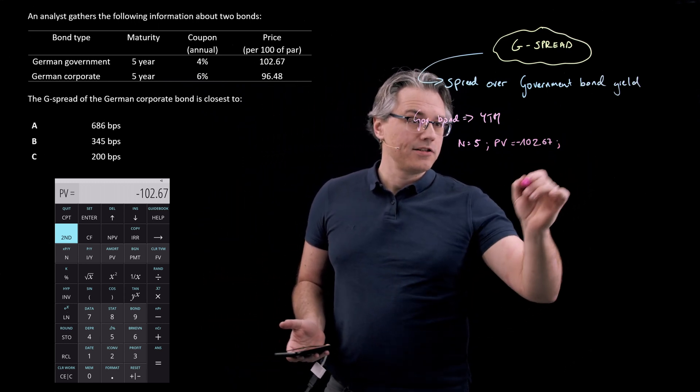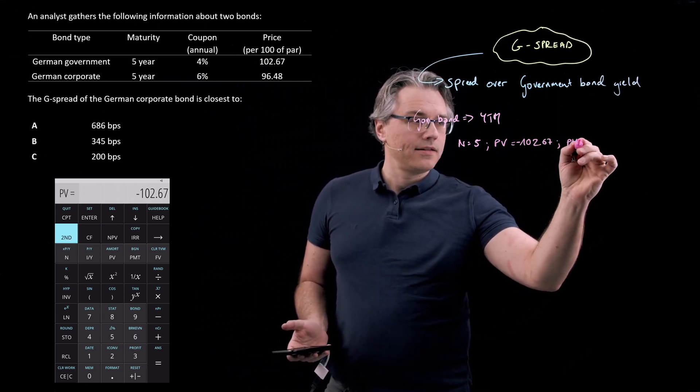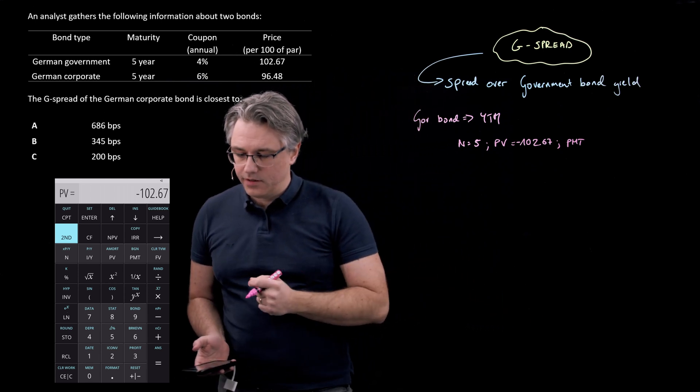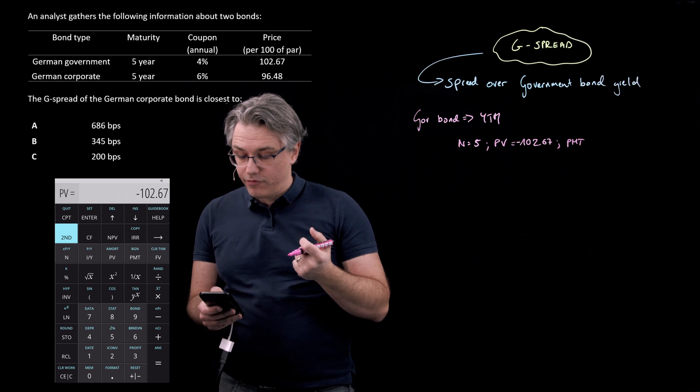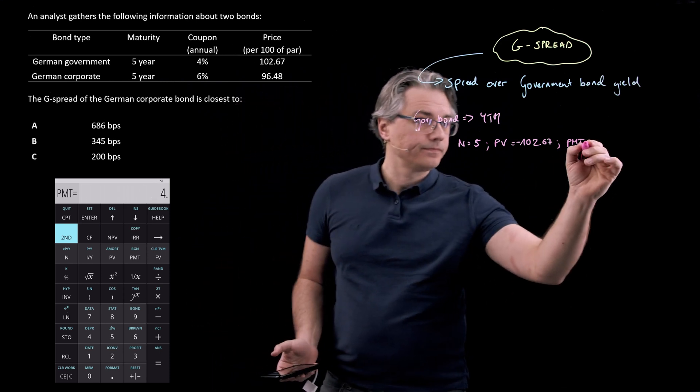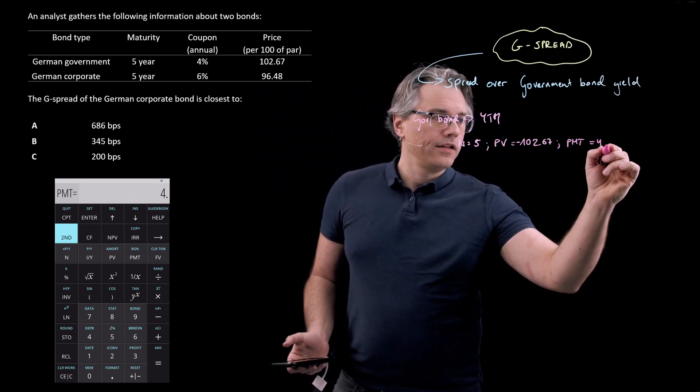Now, in terms of the PMT, that's going to be the coupon. I'll set this at the coupon for the German government bond, which is 4% or 4, for PMT.